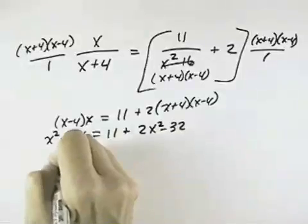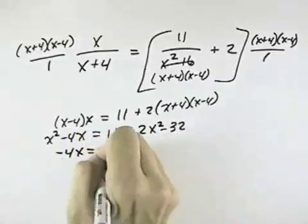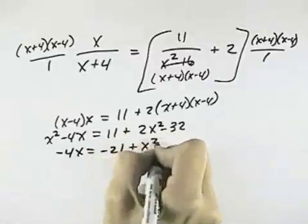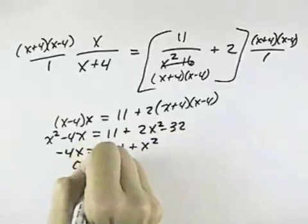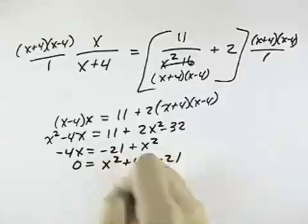Subtracting an x squared from both sides, I get negative 4x equals, let's see, 11 minus 32 is negative 21, and subtracting an x squared I have plus x squared. And if I bring the 4x over, I have 0 equals x squared plus 4x minus 21.